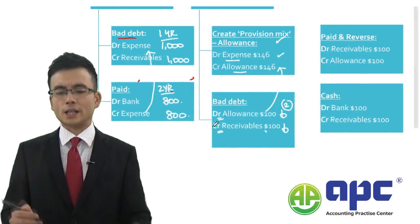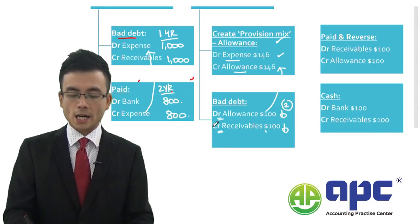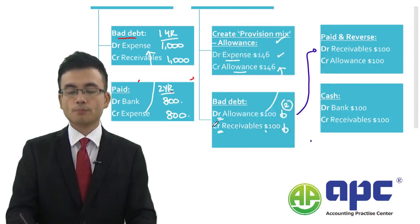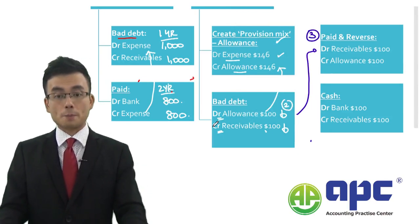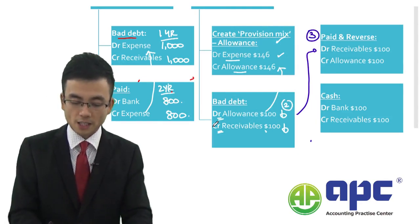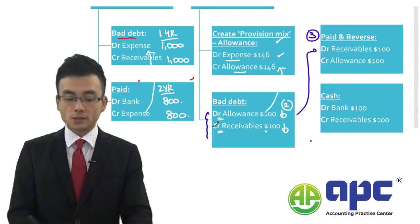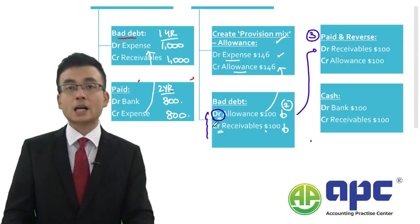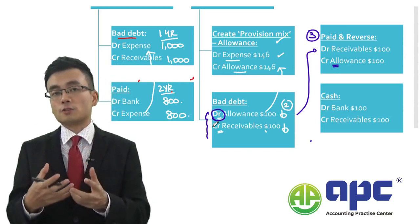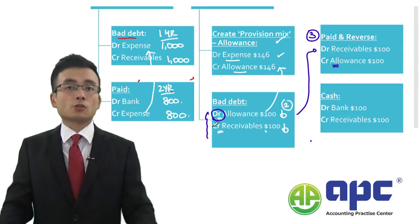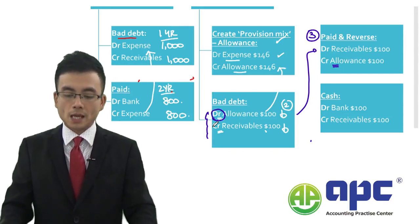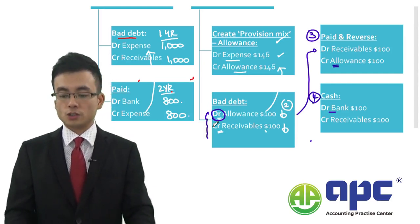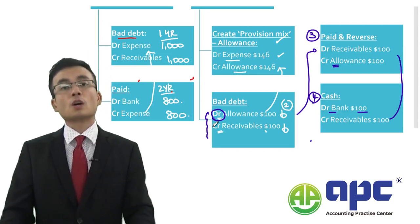But subsequently, when the customer's economic position improves and the customer pays $100 to my business, we reverse the bad debt — I had debited the allowance for $100 before, so now I credit the allowance and reverse the effect of $100. Then when I receive the cash, I debit bank for $100 and reduce receivables by $100.